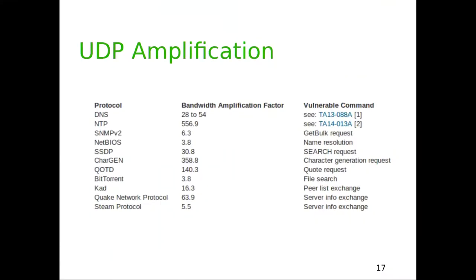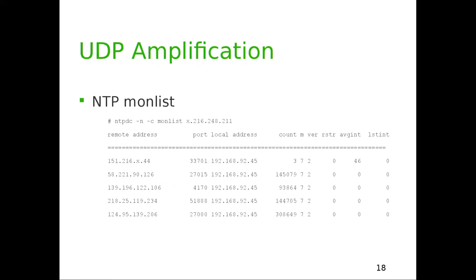Some reflection factors are really high. If you use DNS with a reflection factor of 30, you send out one gigabit per second and the receiver gets 30 gigabits per second of incoming traffic. As an example, NTP has a monlist feature — you can ask it who's currently querying it. You can see here a Chinese IP that's currently being DDoS'd through this method.